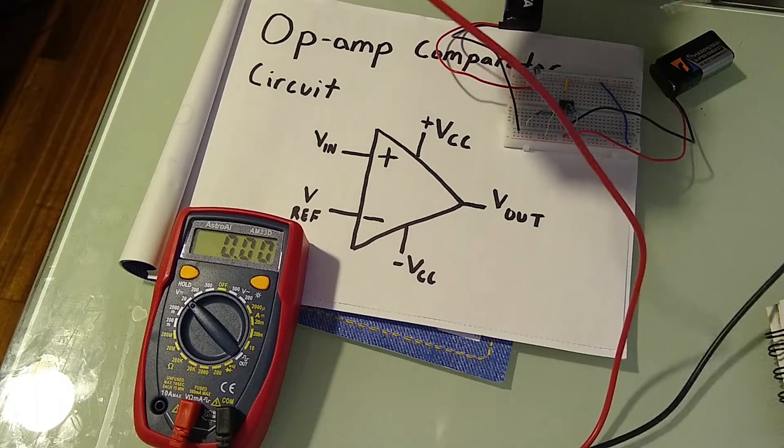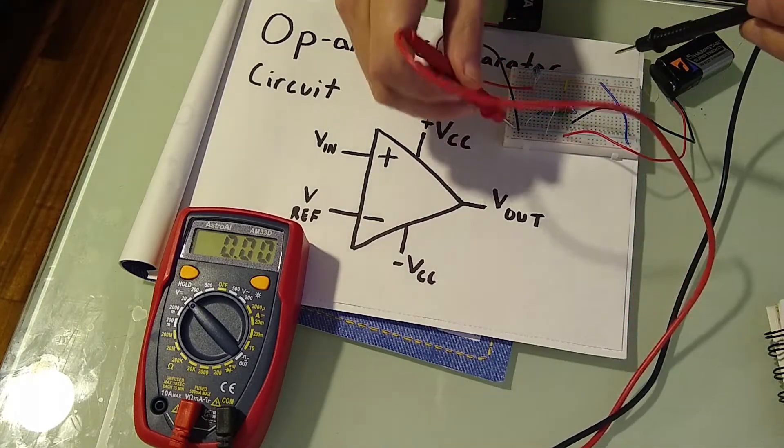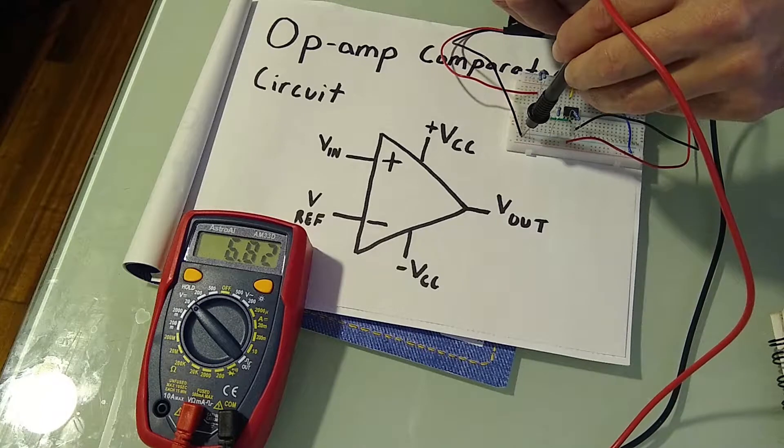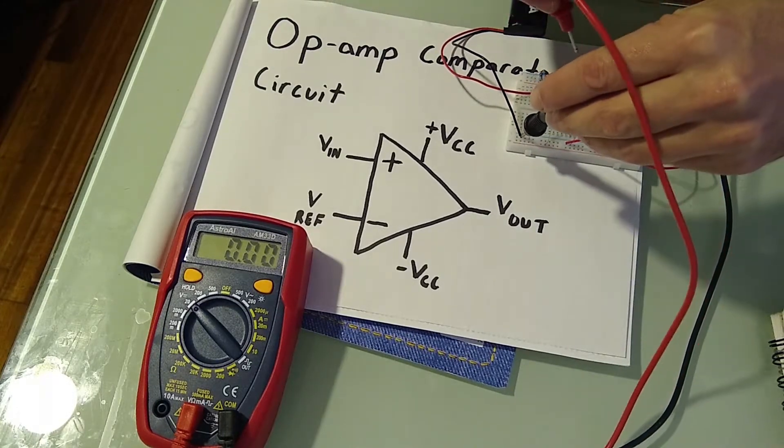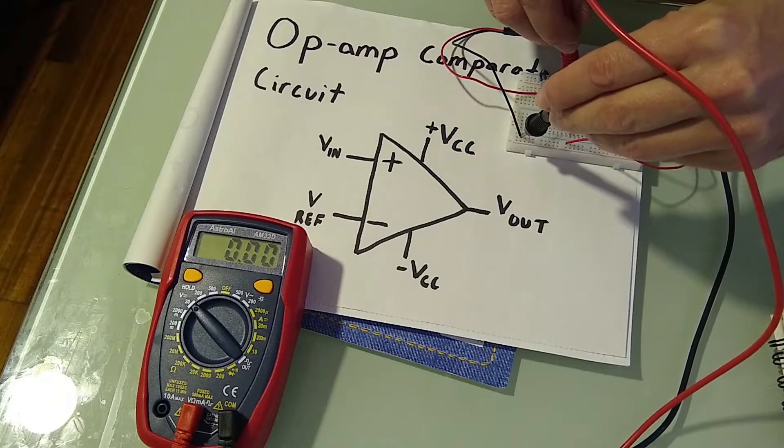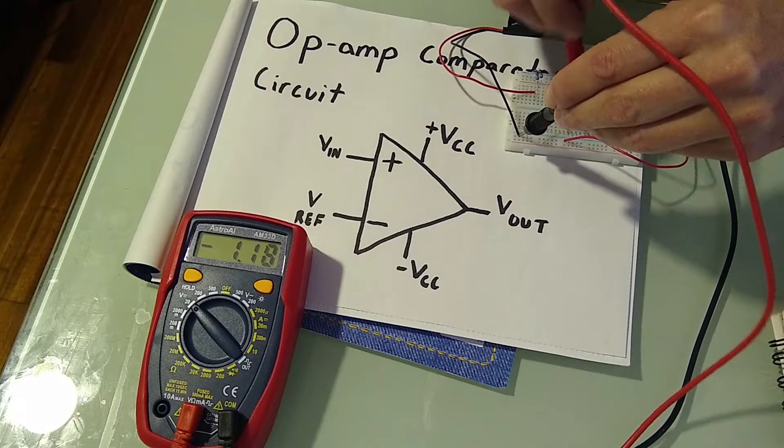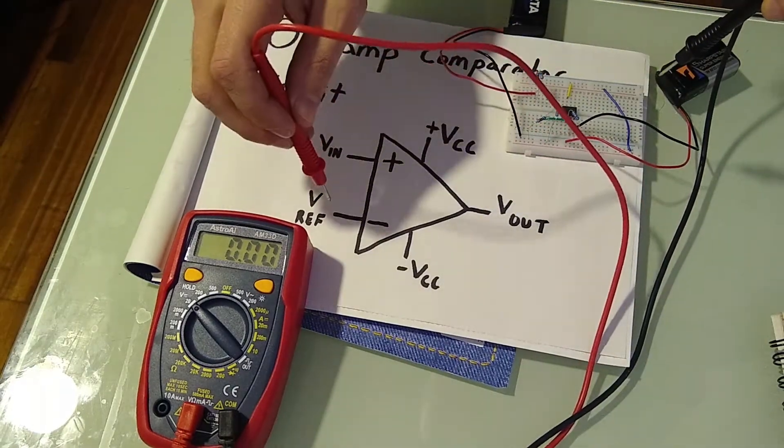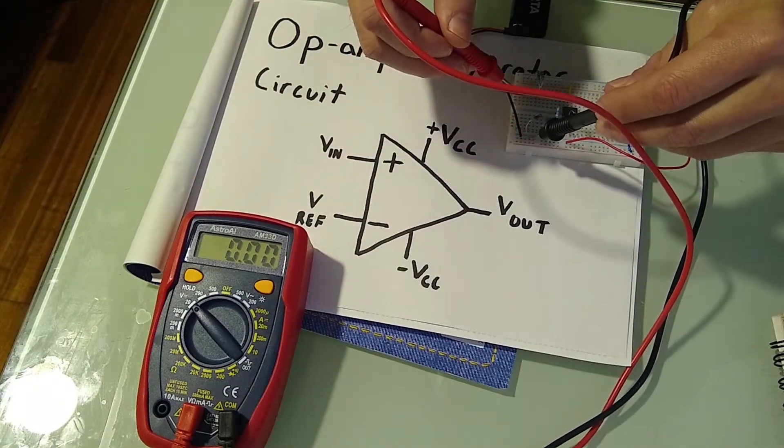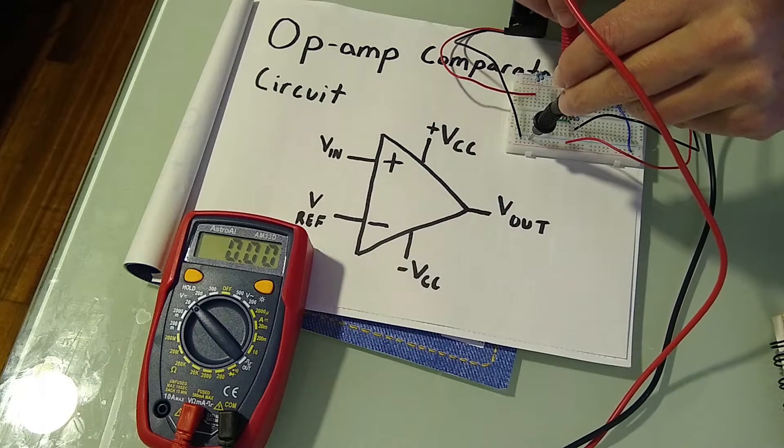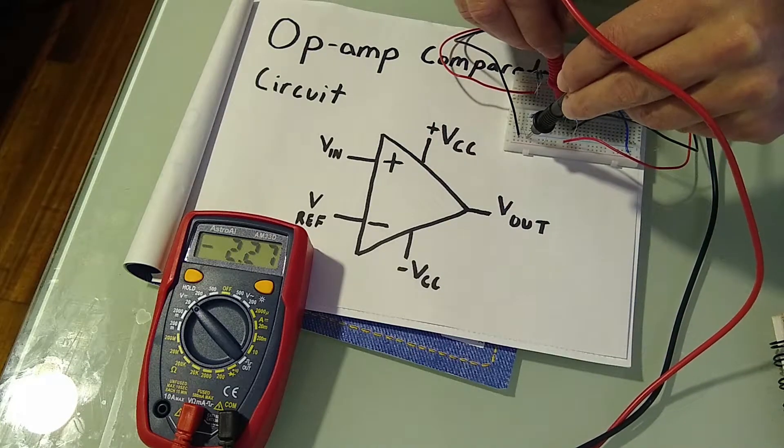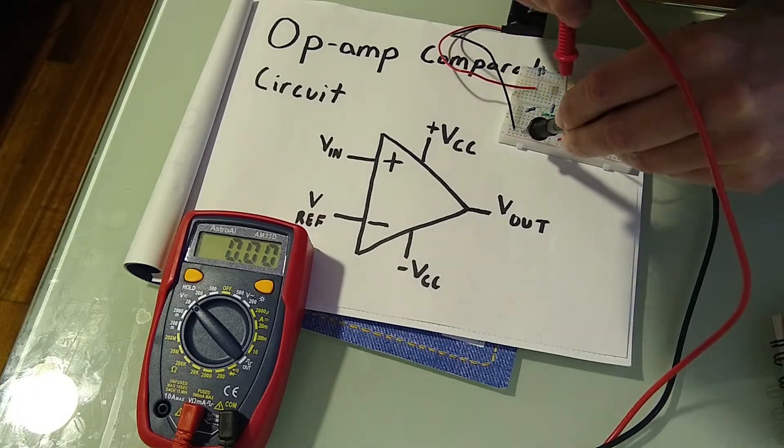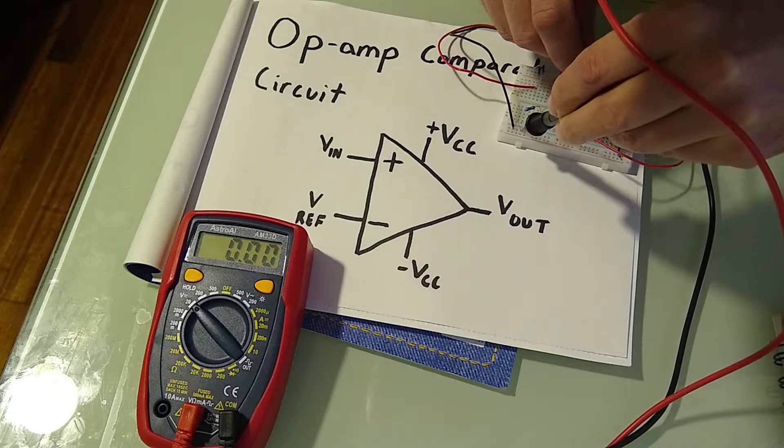Okay, now for a quick example. So our positive VCC is equal to positive 6.82 volts. Our negative VCC is equal to negative 8.37 volts. Our voltage reference is coming in to pin 2, and that is 0 volts. We're grounded.